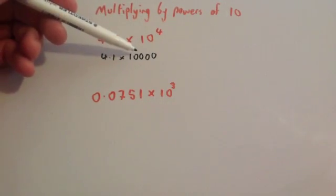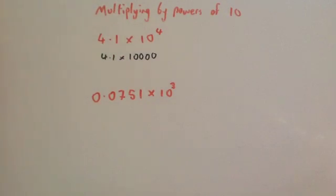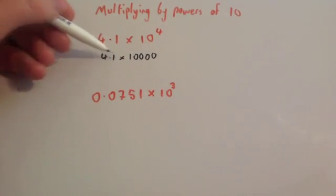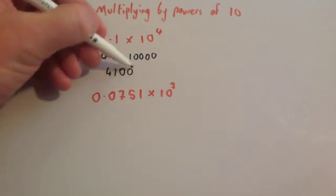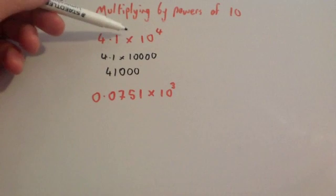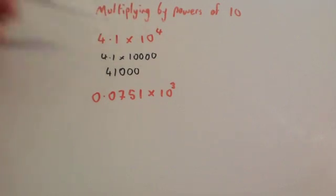So that means we're going to move the decimal place 1, 2, 3, 4 places to the right. So if you move it once to the right you get 41 and then you need to move it another three times so just add on three zeros. So 4.1 times 10 to the power of 4 would be 41,000.